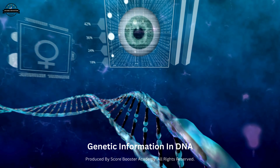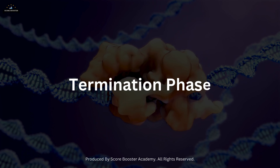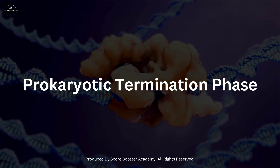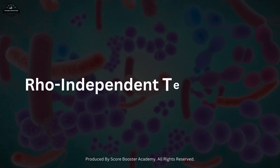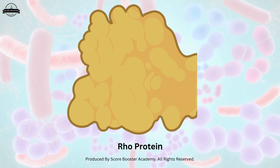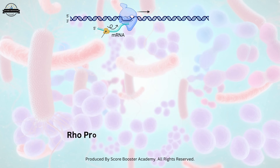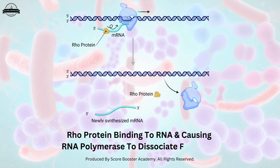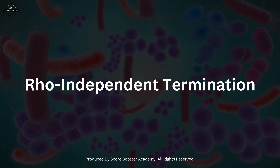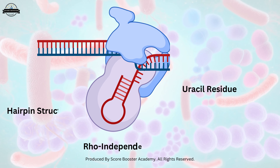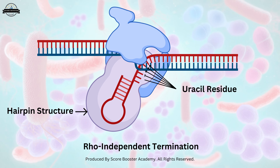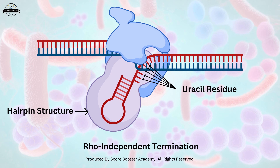The final phase of RNA transcription is termination. In prokaryotes, termination can occur through two main mechanisms: rho-dependent and rho-independent termination. Rho-dependent termination involves the rho protein, which binds to the RNA and causes RNA polymerase to dissociate from the DNA. Rho-independent termination relies on a hairpin structure in the RNA, followed by a sequence of uracil residues.